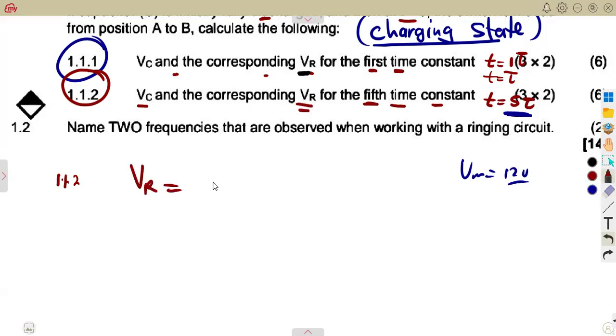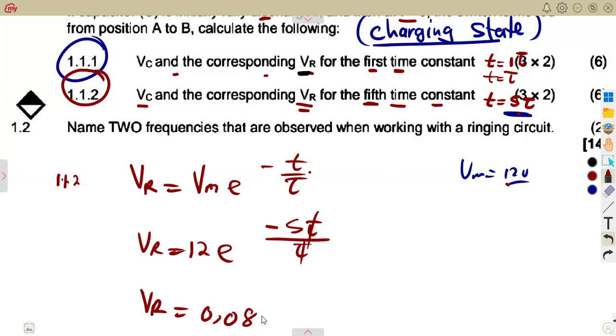VR, the corresponding, remember this is a charging state. We said our VR is equal to VM e to the exponent of minus t over τ. We're just going to substitute. Your VM does not change: 12 e to the exponent of minus t. Remember, time is 5τ, so that's 5τ over τ. This one and this one was going to cancel. What are you remaining? 12 e to the exponent of negative 5. That was going to give us 0.0809 volts, something like that. Very, very small. That is the condition of your questions.